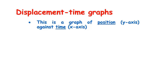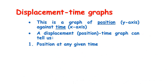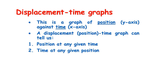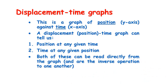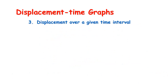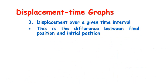From this graph we can read the position at any given time — find the time, go up to the graph, then go across to the vertical axis. We can also find the time at any given position by finding the position and going across to see where it cuts the graph. Similarly, we can find the displacement over a given time interval by finding the final displacement, finding the initial displacement, and then calculating the difference between the two.